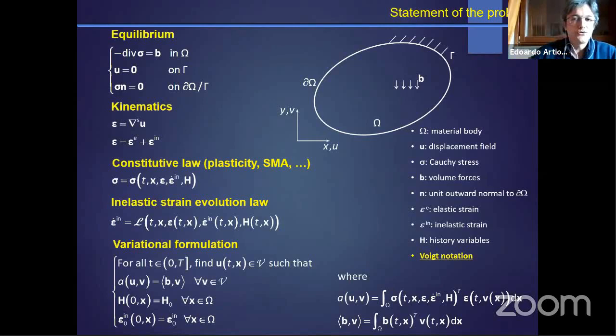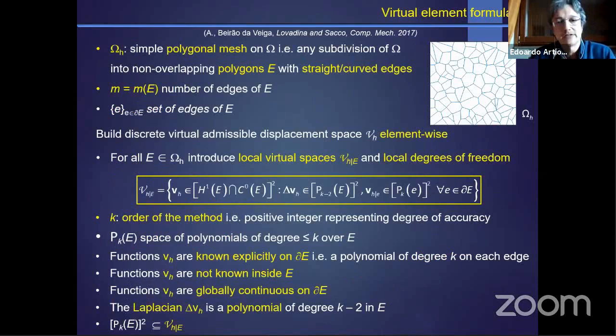So when we go to virtual elements, we first start from considering a simple polygonal mesh of our reference domain, which is a subdivision of the body domain into non-overlapping polygons with either straight or curved edges, as we have here in the sketch on the upper right part of the slide, where we have a unit square which is discretized by a Voronoi tessellation. So that's the kind of mesh we're looking into when we deal with virtual elements.